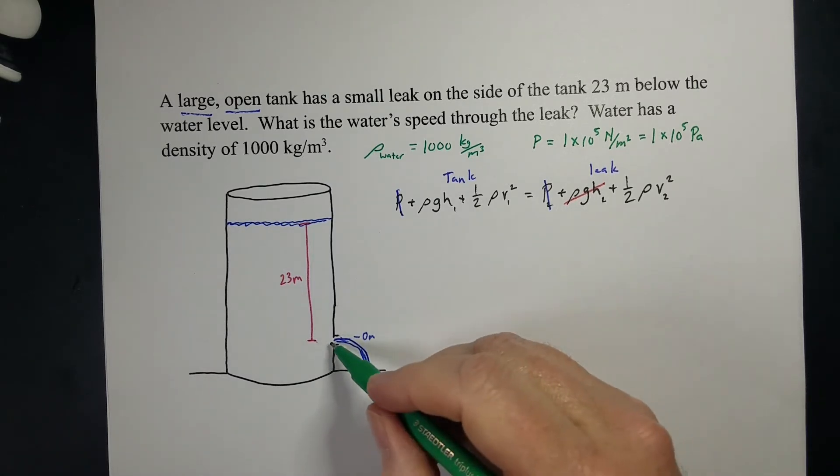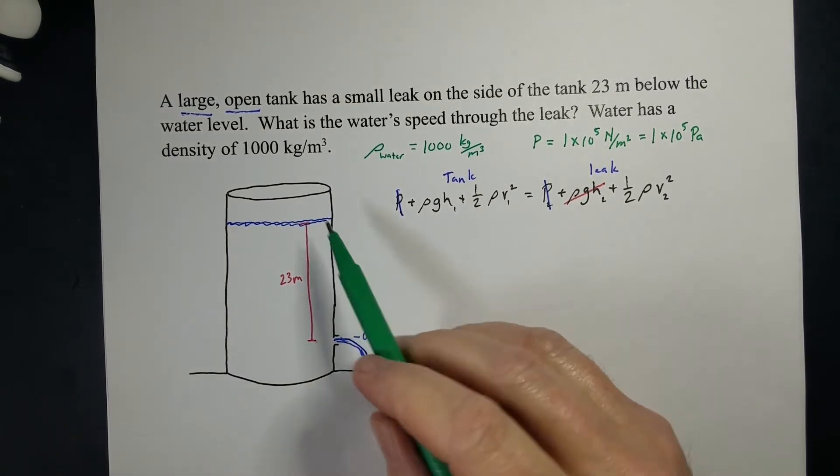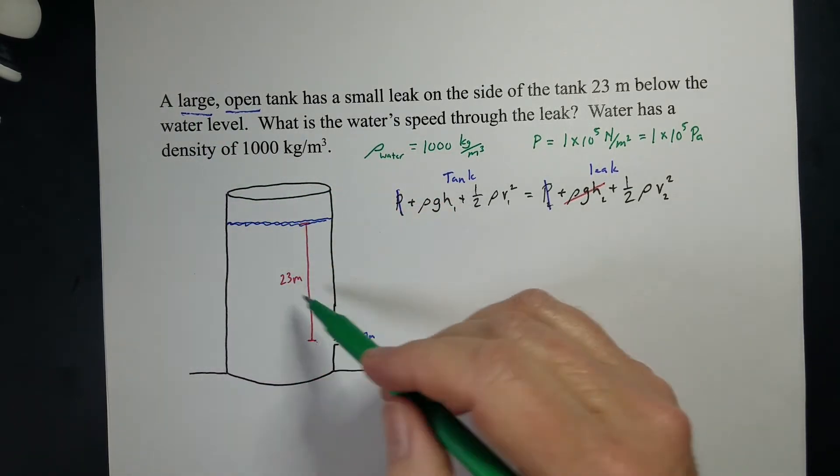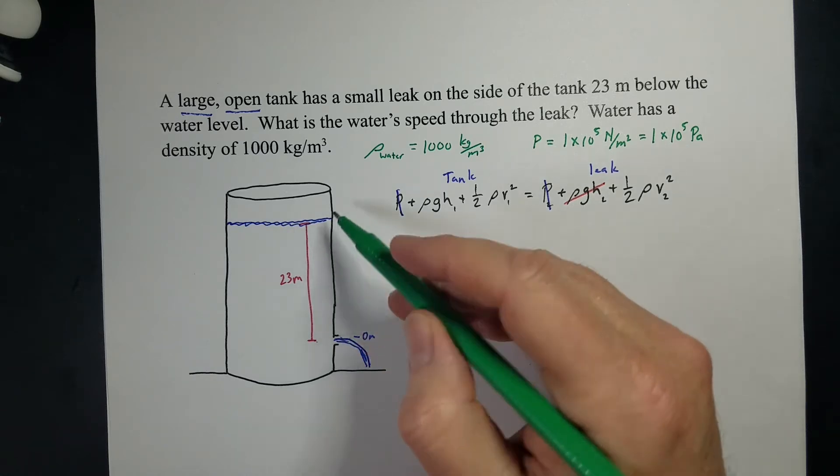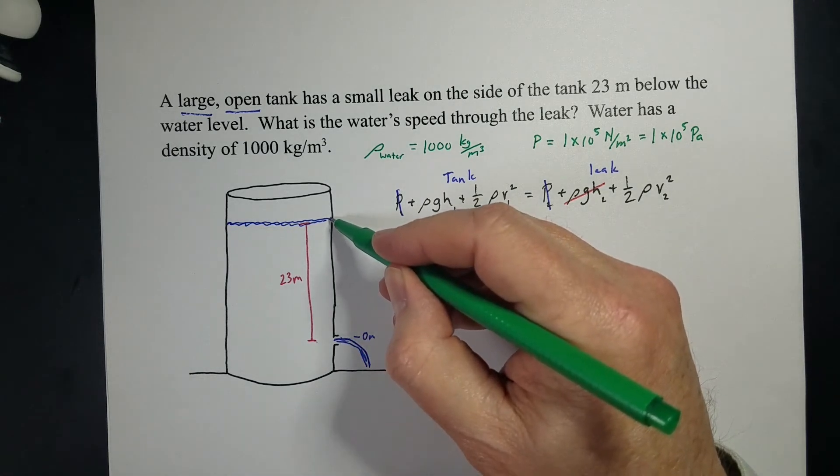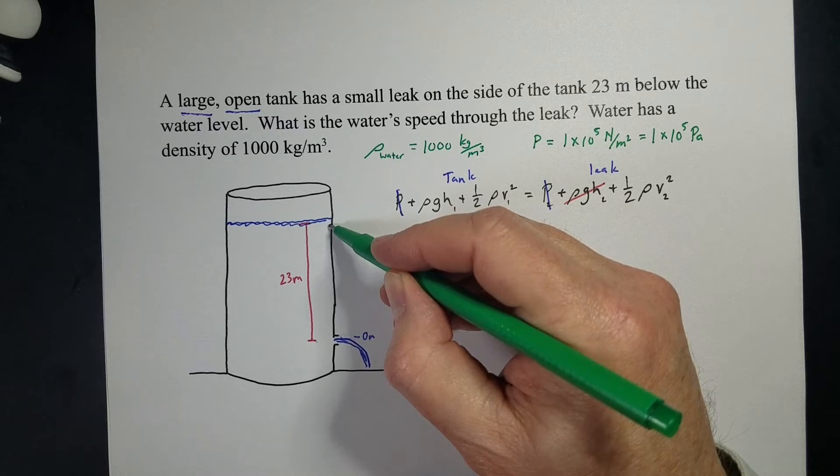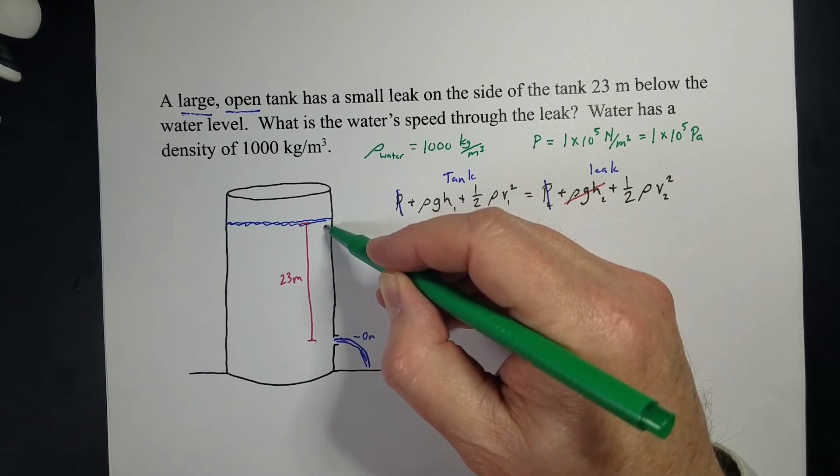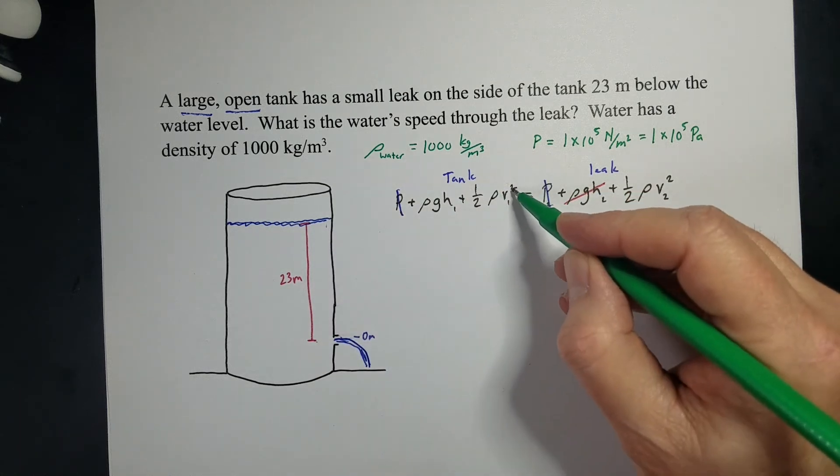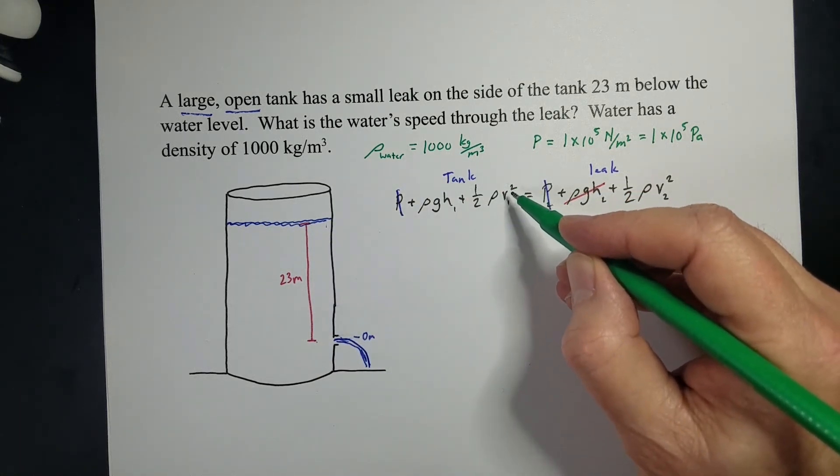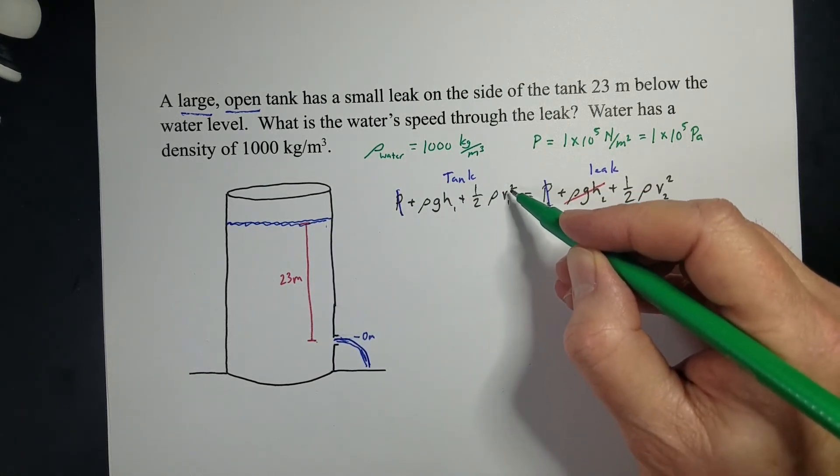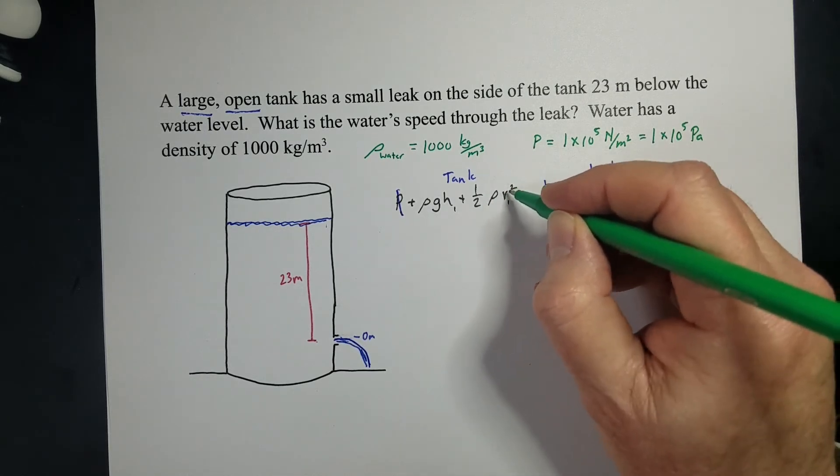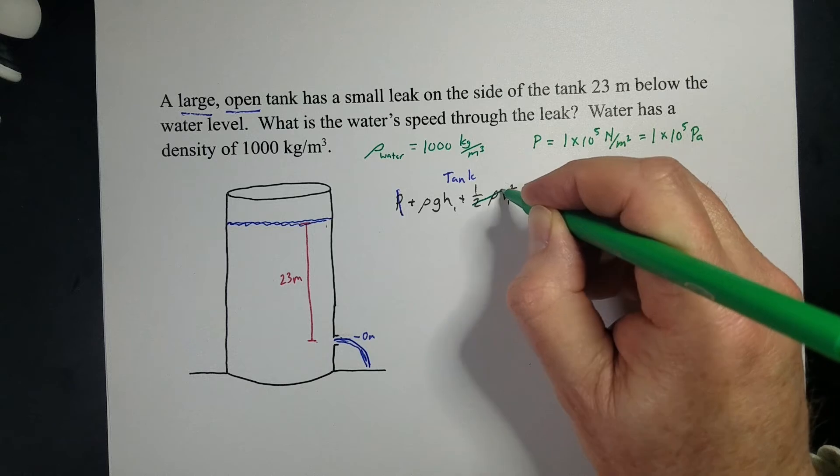Here's the other thing. Water is going to be shooting out of this, but since this is a large tank, that means that this tank is big compared to that leak right there. So even though the water level is dropping, it's dropping really, really slow. So that's a very small velocity of this water level dropping. And in the equation, we're going to square that. So if we square a small number, we get an even smaller number. And so this essentially is 0, so we can cancel this term out.